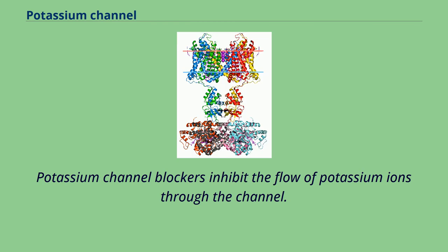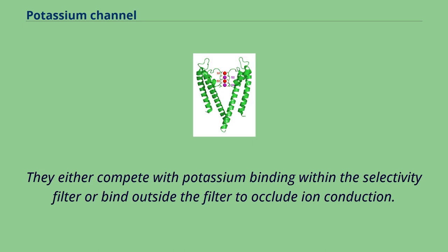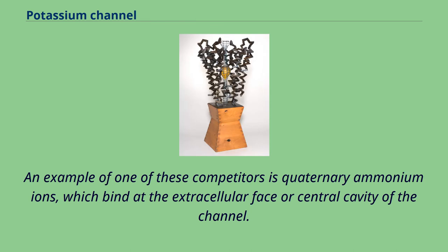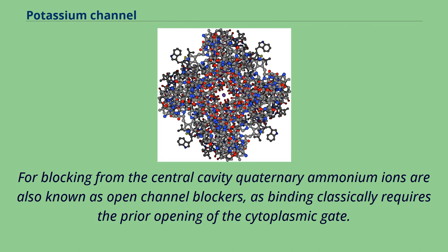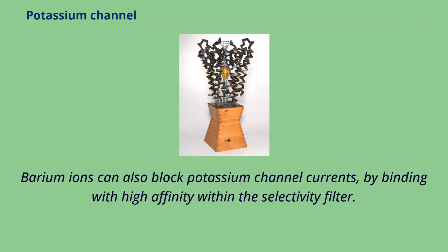Potassium channel blockers inhibit the flow of potassium ions through the channel. They either compete with potassium binding within the selectivity filter or bind outside the filter to occlude ion conduction. An example is quaternary ammonium ions, which bind at the extracellular face or central cavity of the channel. For blocking from the central cavity, quaternary ammonium ions are known as open channel blockers, as binding classically requires prior opening of the cytoplasmic gate. Barium ions can also block potassium channel currents by binding with high affinity within the selectivity filter.